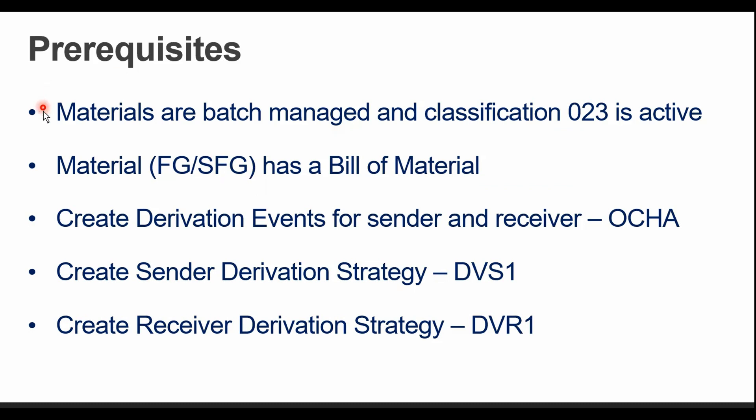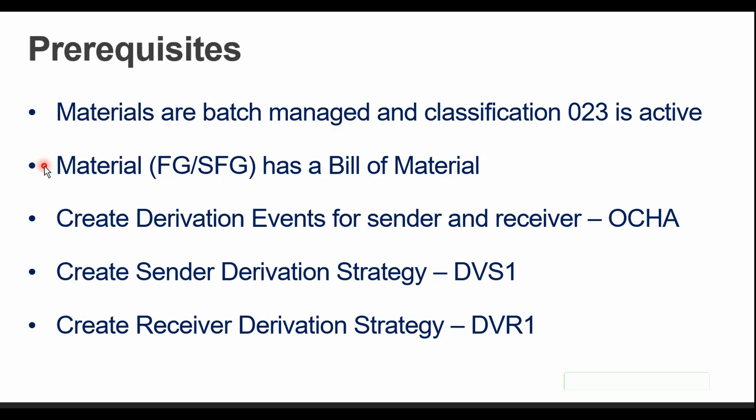The first prerequisite is that the materials should be batch managed and they should be classified in class 023, which is basically for batches. The material that we are actually manufacturing — whether semi-finished or finished product — should always have a bill of material. Without a bill of material we cannot execute the batch derivation process.